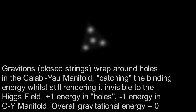So what happens is that the gravitons gain the energy and the manifold loses it. So you get plus one in the holes captured by the gravitons and you get minus one in the manifold. Minus one plus one equals zero. So the overall gravitational energy of the system is zero.